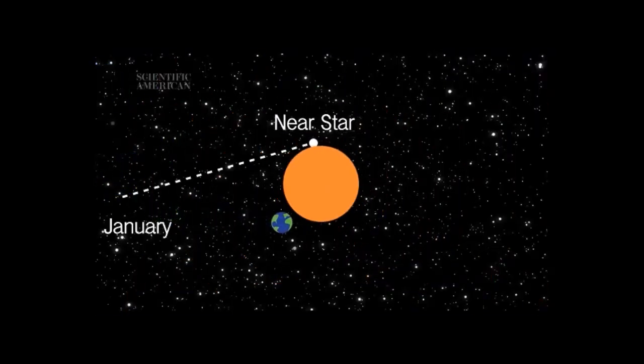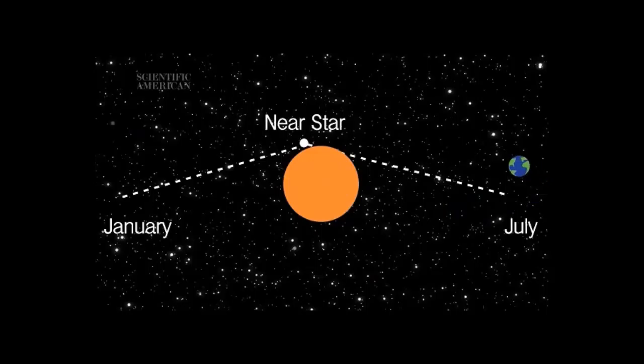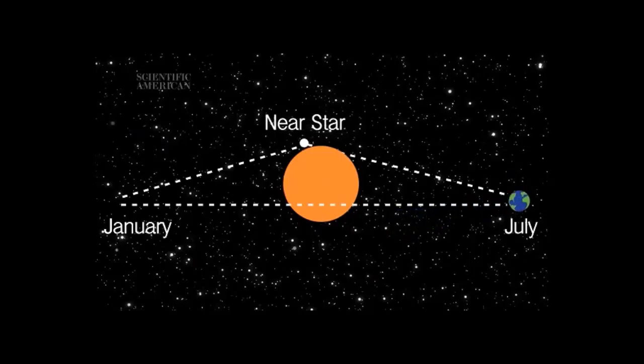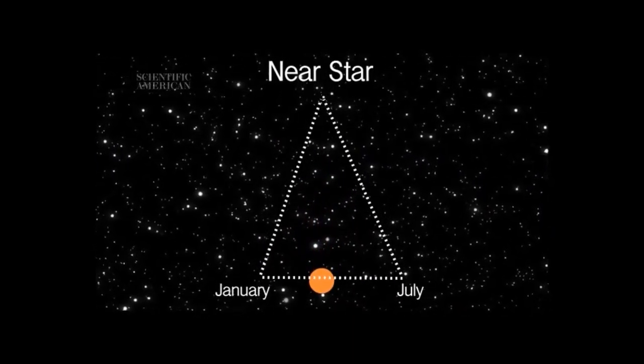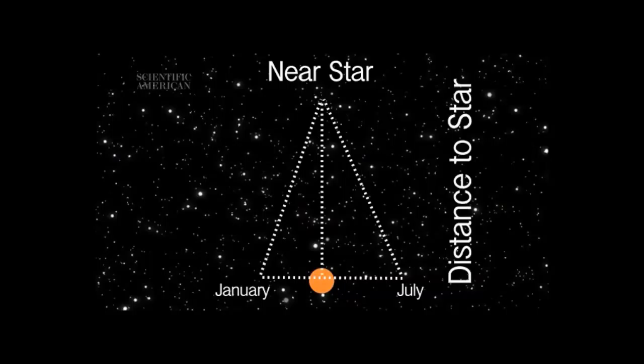By looking at a star in January, and then again in July, we can draw a triangle. The base is the diameter of Earth's orbit, and the opposite angle is how far the star appears to shift. Dig up some high school trigonometry, and you can calculate the triangle's height, which is the distance to the star. Knowing these distances lets us measure other things, like the brightness of stars or the size of galaxies. In fact, measuring parallax lets us map out the entire universe.